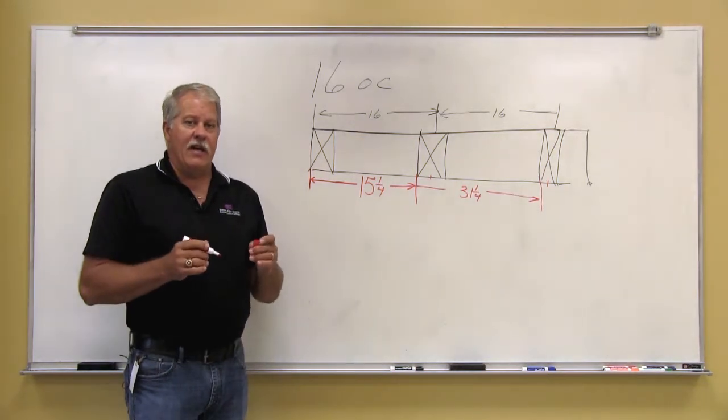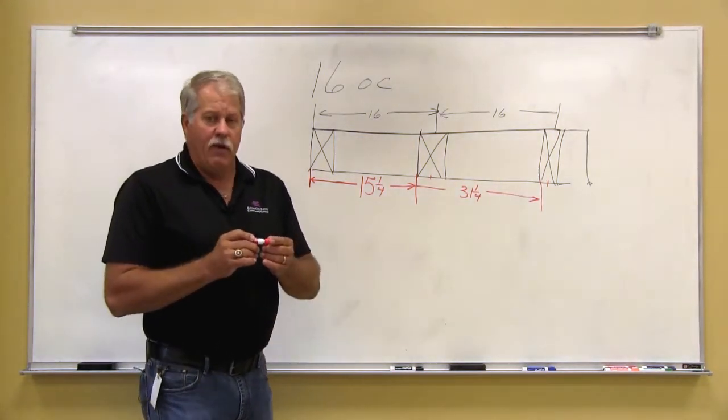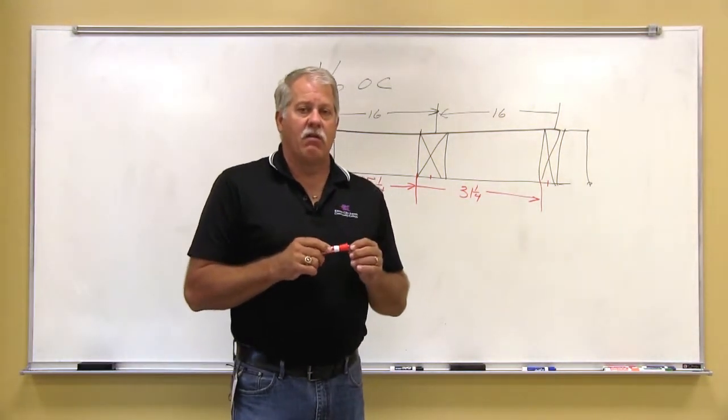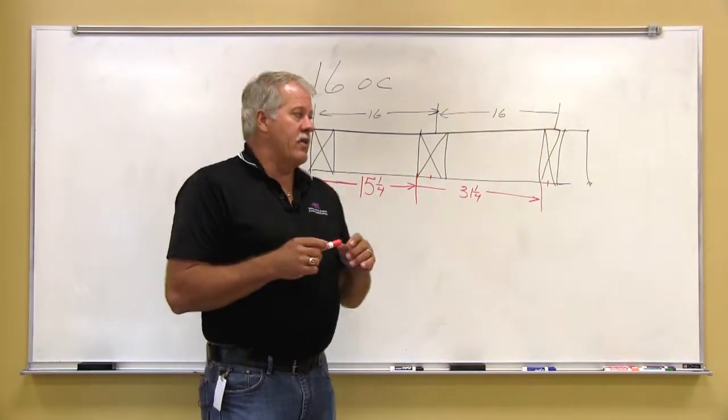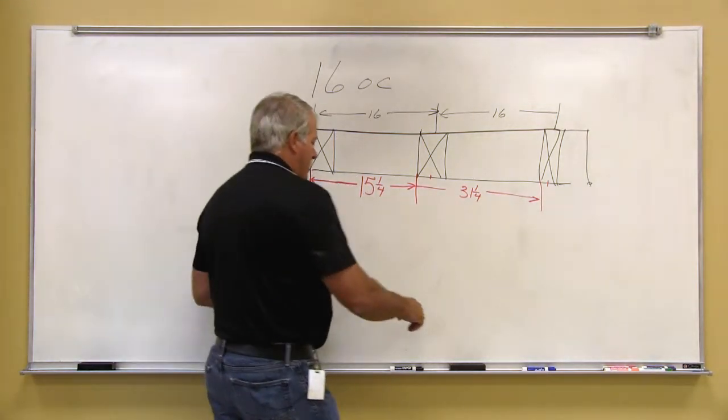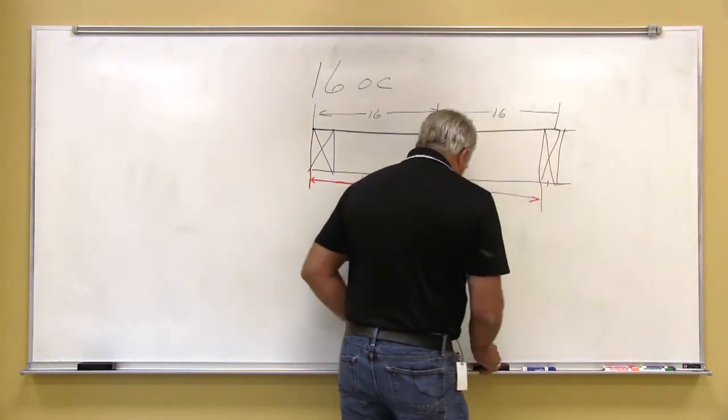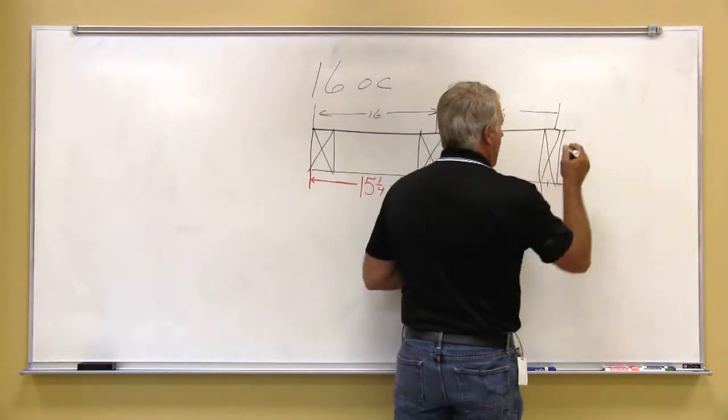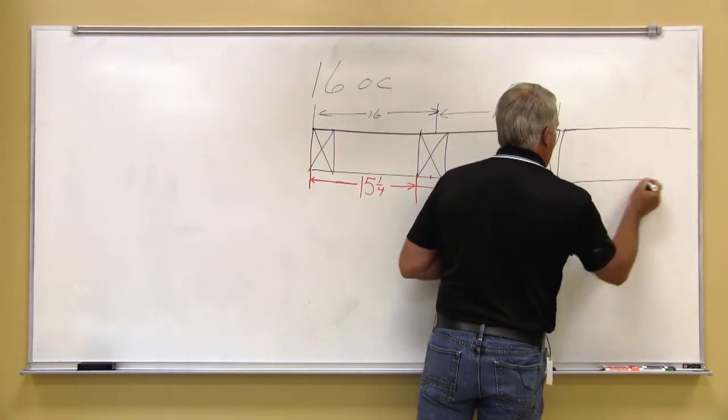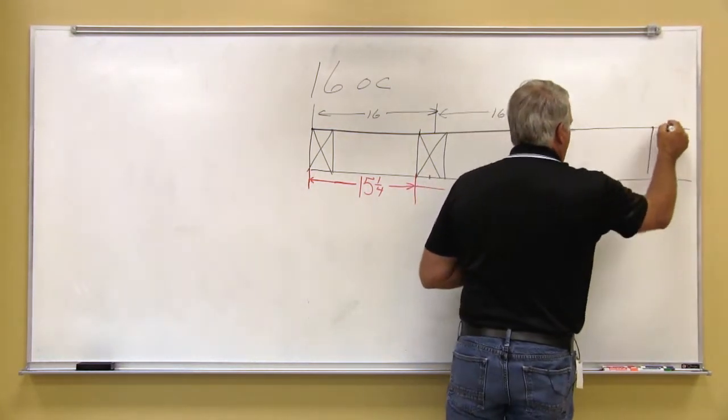The reason behind that is a standard sheet of plywood measures 4 by 8. So what we want is when we put the plywood on this particular wall, we want the plywood to actually break on a stud.